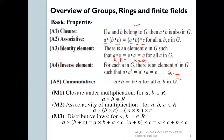The commutative property states that A dot B is equal to B dot A. We have already discussed that A dot A-dash is equal to A-inverse. If we have two elements with an inverse, then A dot B is equal to B dot A. If we have a group, we will consider elements A1 and A5.